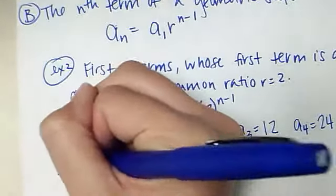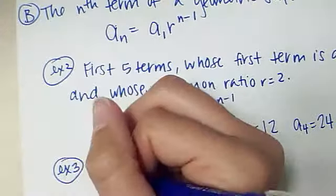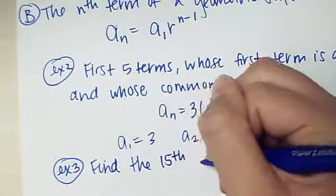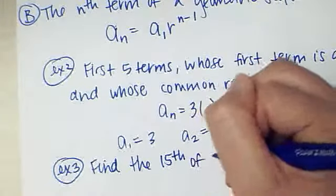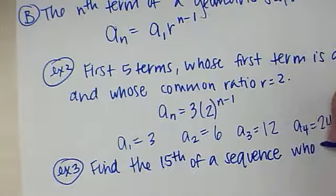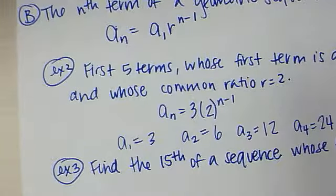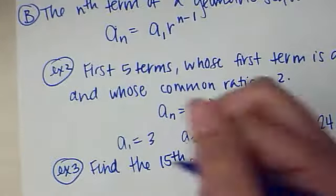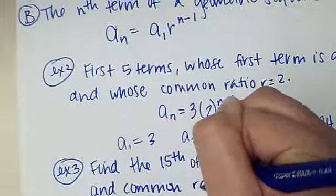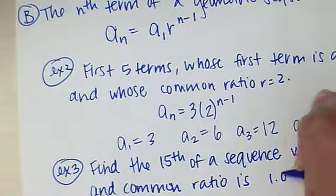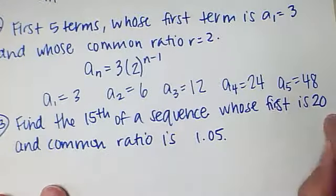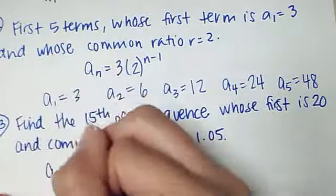Let's look at a couple more examples. Example 3. I want you to find the 15th term of a sequence whose first is 20, and common ratio is 1.05. So I'm finding a geometric sequence. I want the 15th term. The first term is 20. The common ratio is this. I'm going to go ahead and plug that in.